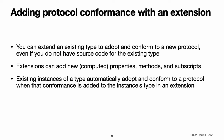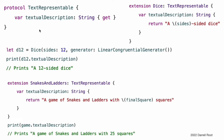Adding protocol conformance with an extension. You can extend an existing type to adopt and conform to a new protocol, even if you do not have access to the source code for the existing type. Extensions can add new properties, methods, and subscripts to an existing type, and are therefore able to add any requirements that a protocol may demand. Existing instances of a type automatically adopt and conform to a protocol when that conformance is added to the instance's type in an extension. For example, this protocol called TextRepresentable can be implemented by any type that has a way to be represented as text. The Dice class from above can be extended to adopt and conform to TextRepresentable, with the protocol name provided after the type name, separated by a colon, and an implementation of all requirements provided within the extension's curly braces.